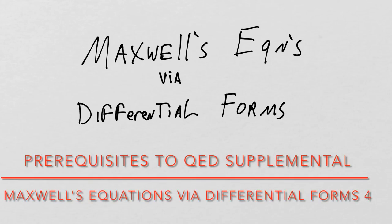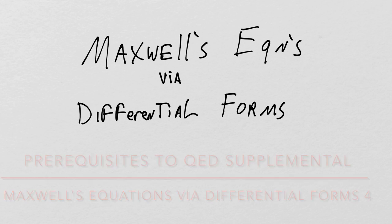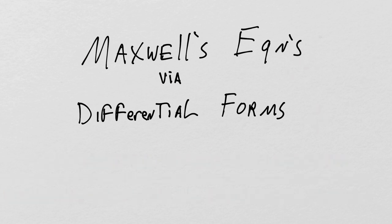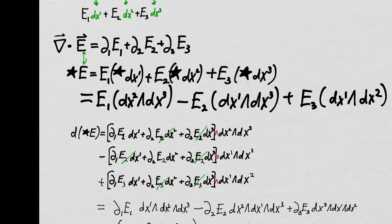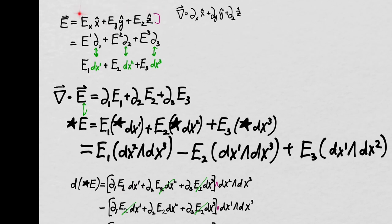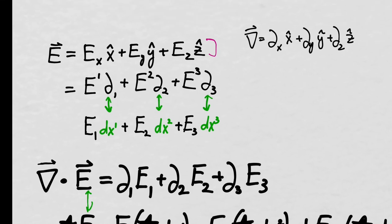Welcome back. We are going to continue our story of Maxwell's equations via differential forms — a little sidebar here that I'm more than happy to trod down. We've already made some pretty significant progress. In the last lecture, we discovered that if we were interested in understanding the divergence of a vector E, where E is understood to be a vector in the Gibbsian sense — your classic vector analysis.